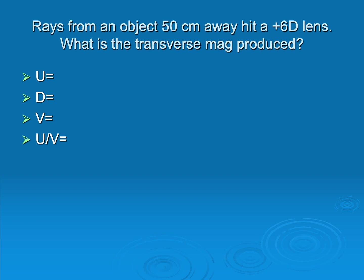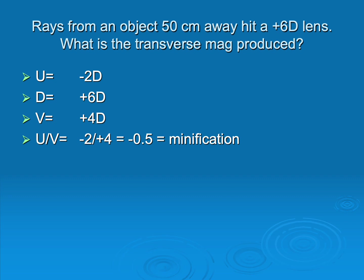Here's one where the object is 50 centimeters away from a plus 6 lens. That means U is minus 2. We know it's a plus 6, and that gives us V of 4. But now U over V is less than 1. Anytime it's less than 1, that is minification — the image is smaller than the object.